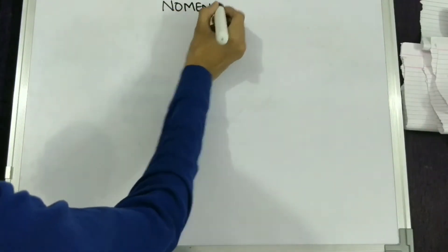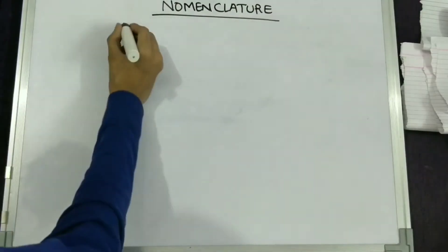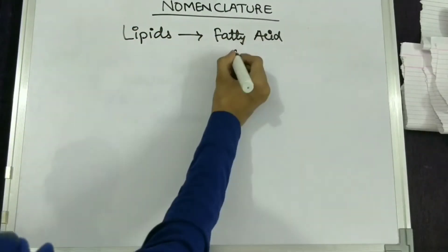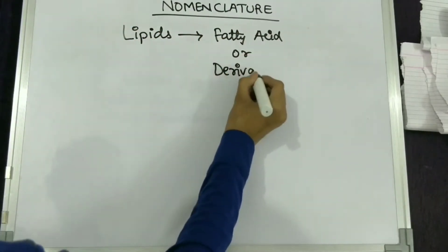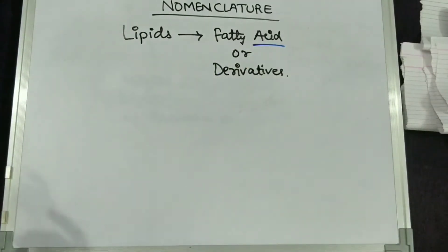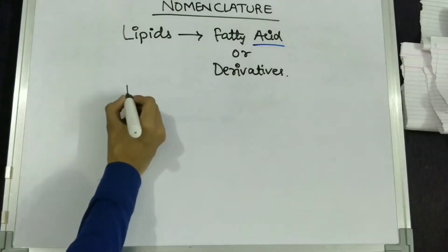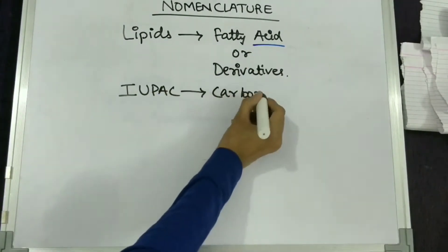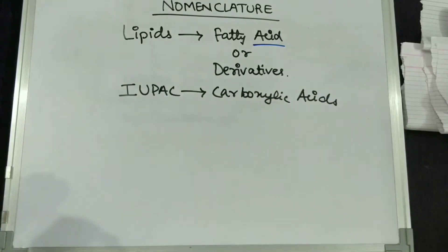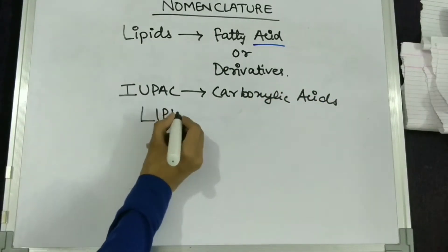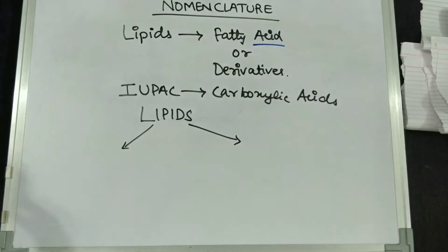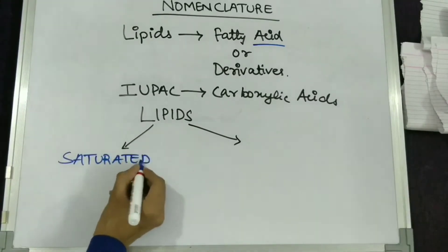Now let's have a look at the nomenclature. According to the definition, lipids are either fatty acids or their derivatives, so the rules for carboxylic acid will be applied for IUPAC nomenclature. The fatty acid molecule in the lipid is divided into saturated, which contains carbon-carbon single bonds (alkanes plus acid), and unsaturated, which contains carbon-carbon double bonds.